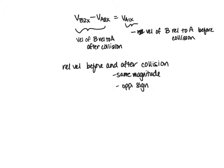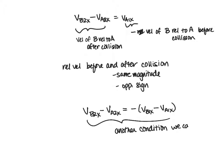We would still get the same results. And so we can just modify this for the case where initially both objects are moving. And this becomes the relative velocity after the collision is equal to minus the relative velocity before the collision. And this becomes another condition that we can use for elastic collisions.